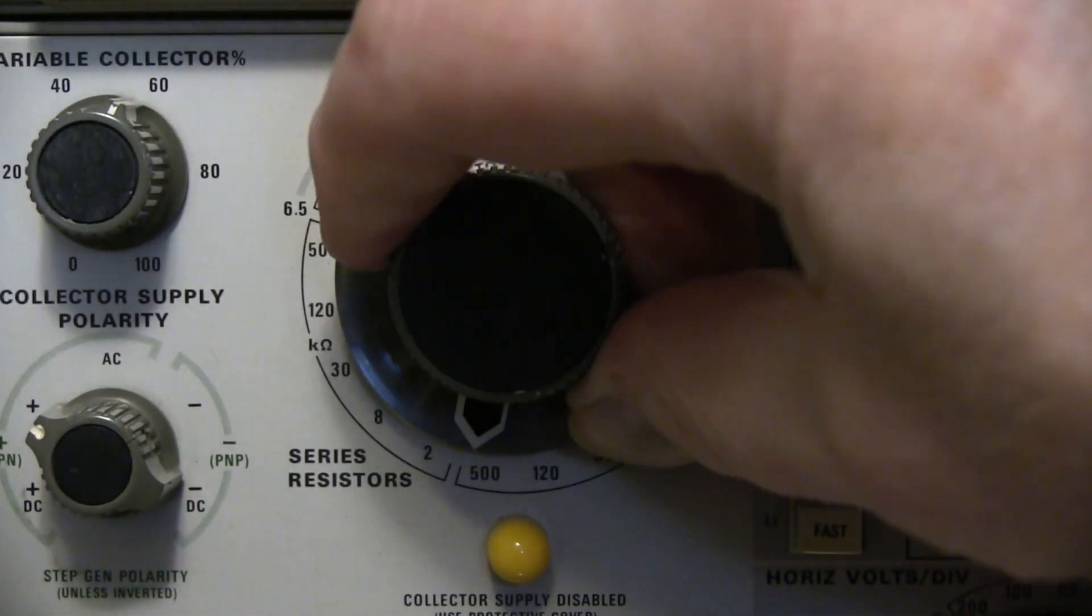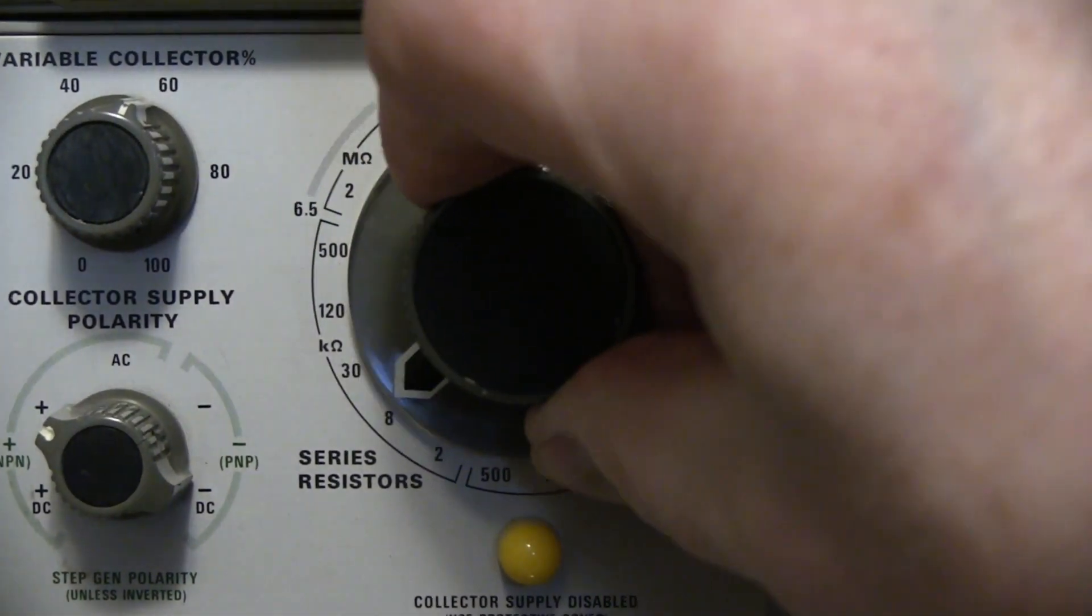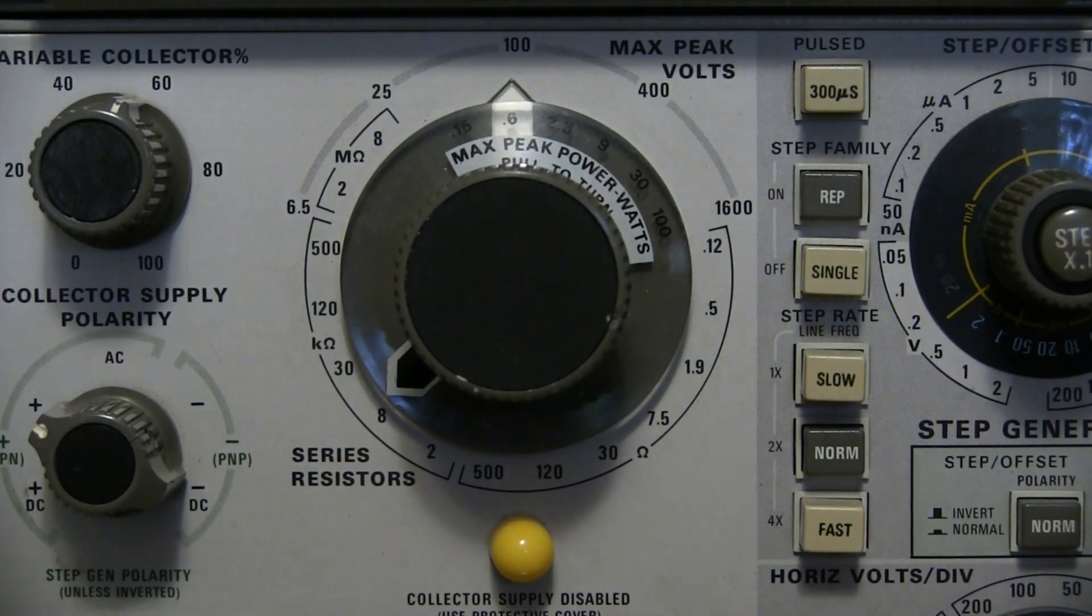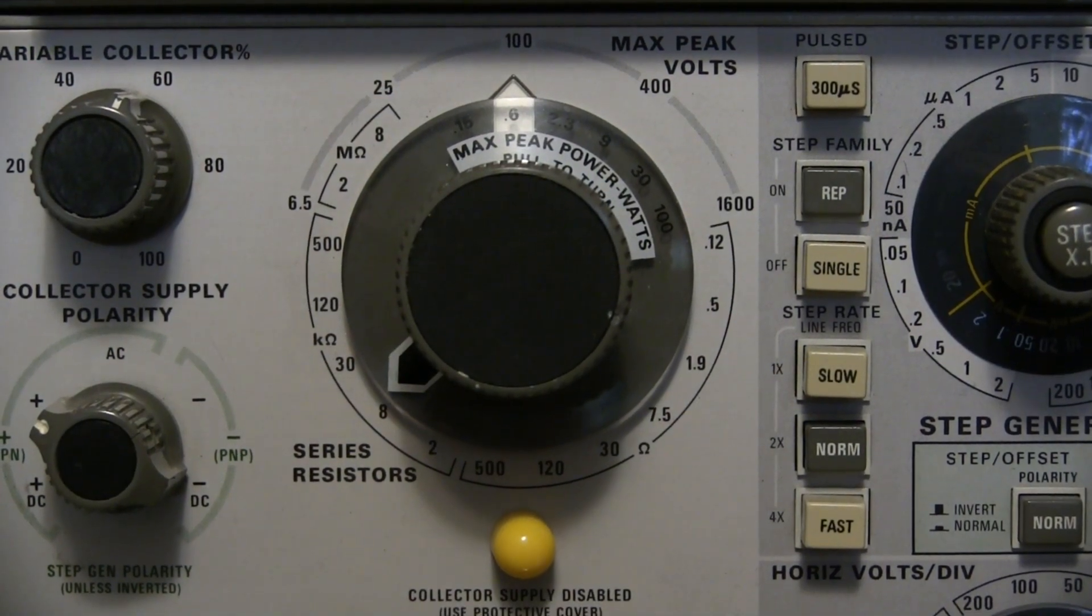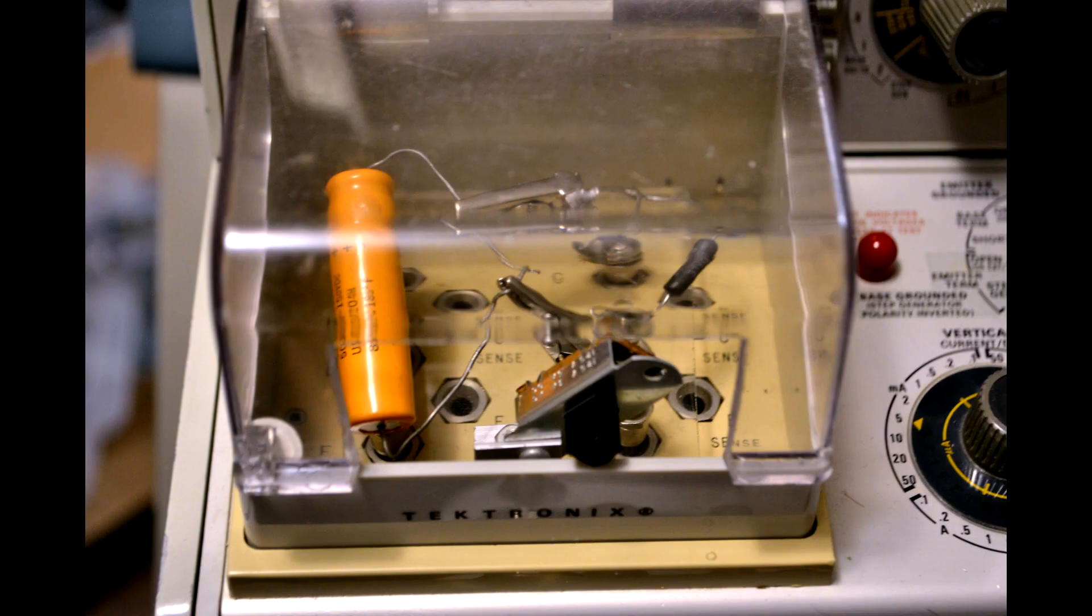Set the series collector resistor, if your curve tracer has such a setting, to any available value between 1 and 10,000 ohms. For a large value capacitor, you may need to reduce the series resistor later.